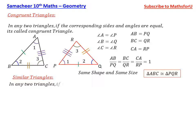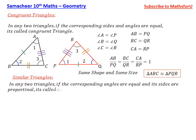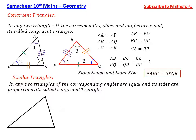In any two triangles, if the corresponding angles are equal and their sides are proportional, it is called similar. AB/PQ can be 1.5 times, 2 times, or 3 times — if it is proportional and the angles are equal, the triangles are similar. The shapes are the same but the sizes are different. That is similar triangles.